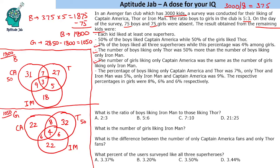Now we can answer the questions. What is the ratio of boys liking Iron Man to those liking Thor? Iron Man total is 2x + 5 + 9 + 3 = 18 + 17 = 35%, and Thor total is 27 + 5 + 7 + 3 = 42%. So the ratio is 35:42, which simplifies to 5:6.